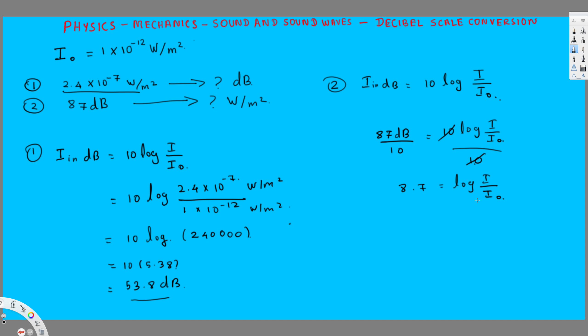Now I am going to take the antilog. We raise both sides as powers of 10: 10^8.7 equals 10^(log(I/I₀)). When we have 10 and log together, they cancel out, so the right side simply becomes I / I₀. This is why we take the antilog - we get 10^8.7 equals I / I₀.